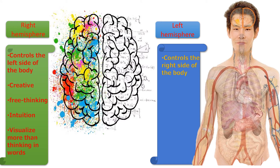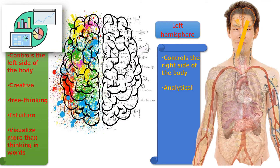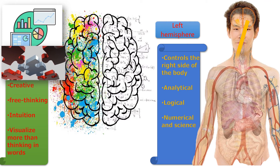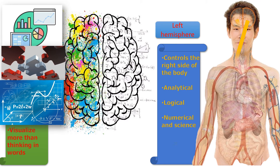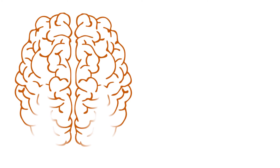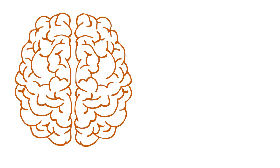The left hemisphere controls the right side of the body, so all functions of the right side are controlled by the left hemisphere. It deals with analytical thinking, planning, logic, numbers and science, and it thinks in words. The left and right hemispheres of the brain are connected to each other through a band of nerve fibers called the corpus callosum.